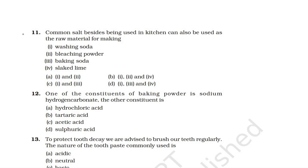In question 11, it says common salt, besides being used in the kitchen, can also be used as a raw material. Common salt is nothing but NaCl. NaCl can be used as a raw material for making washing soda — we require NaCl for that — and also for making bleaching powder, NaCl is required.